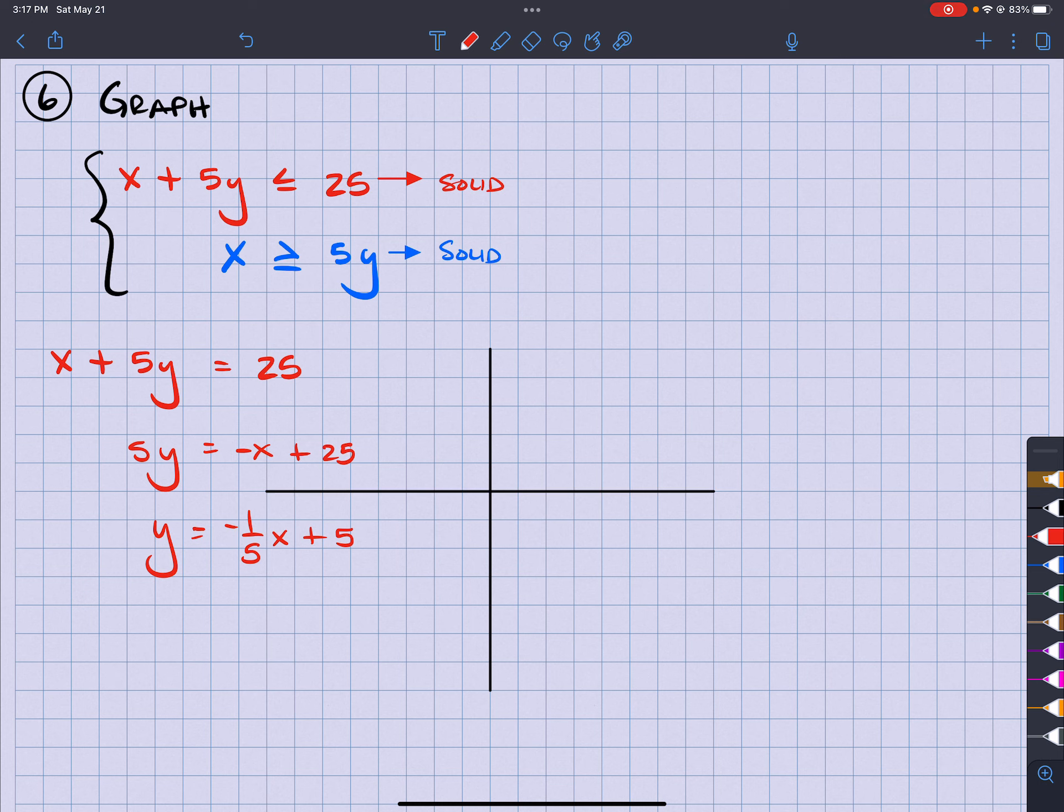So it tells me that my y-intercept is 5. 1, 2, 3, 4. Of course, let me extend this a little further. There we go.